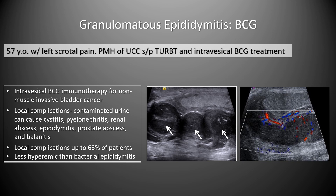A 57-year-old with left scrotal pain and prior urothelial carcinoma treated with intravesical BCG showed markedly enlarged epididymis with heterogeneous masses and relatively little hyperemia compared to bacterial epididymitis. Intravesical BCG is an immunotherapy for non-muscle invasive bladder cancer with complications including cystitis, pyelonephritis, renal abscesses, epididymitis, granulomatous prostatitis, and balanitis — local complications occurring in up to 63% of patients. Key distinguishing feature: the epididymis is considerably less hyperemic than in bacterial epididymitis.